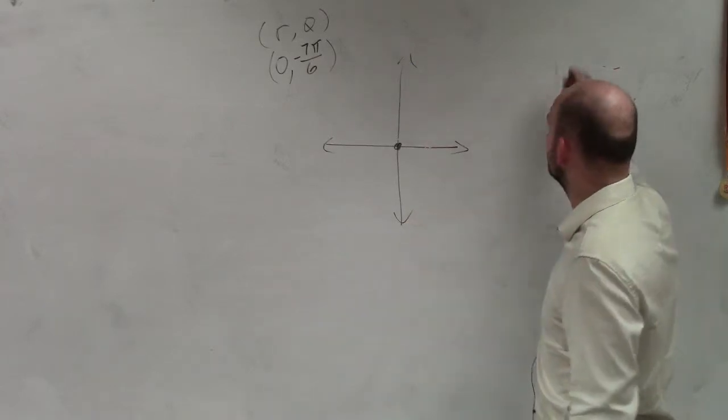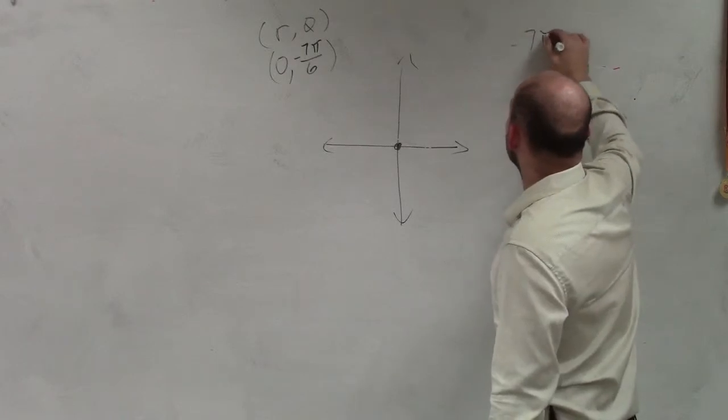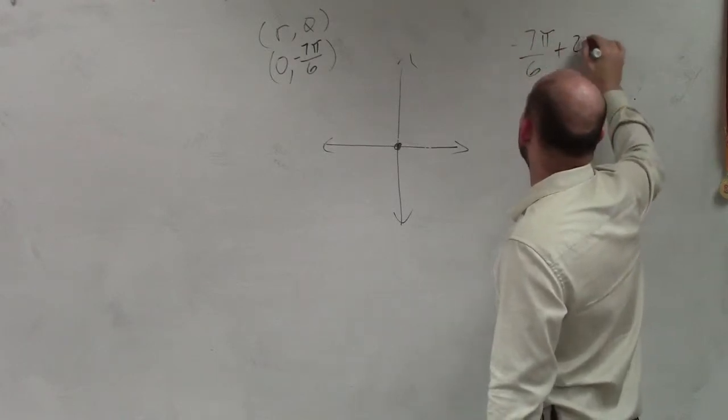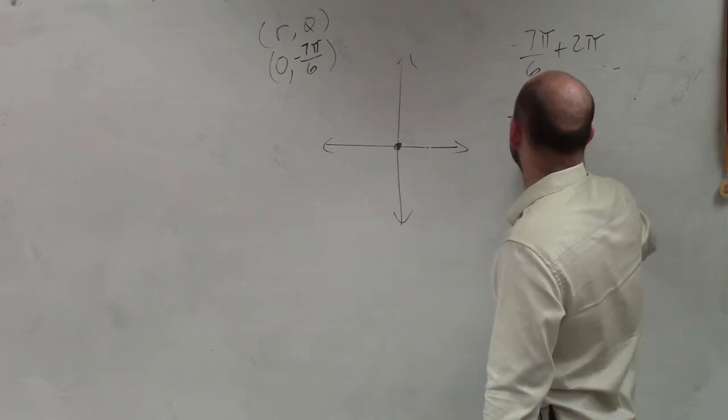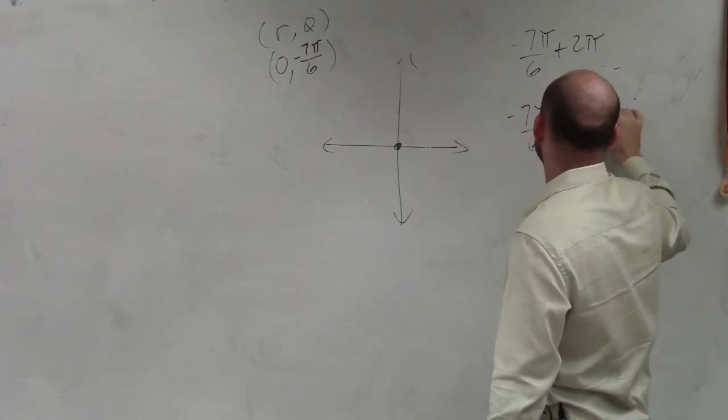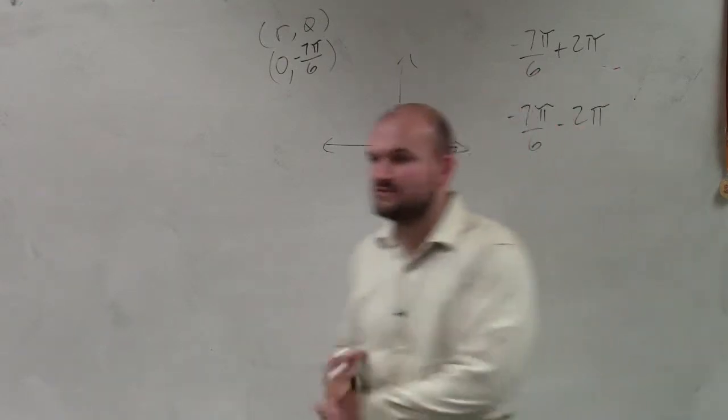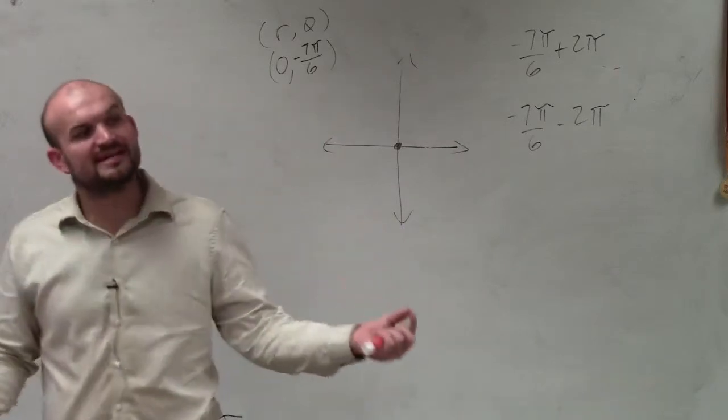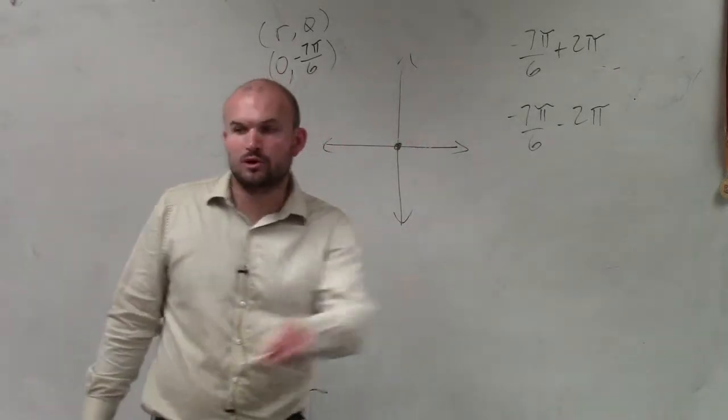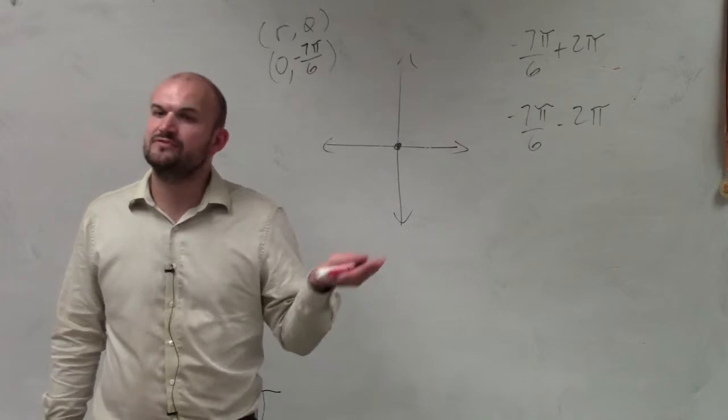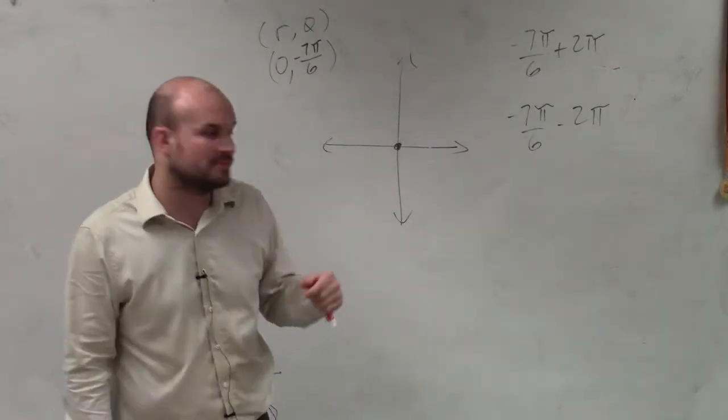So to find coterminal angles, negative 7 pi over 6, we can add 2 pi. Negative 7 pi over 6, we can subtract 2 pi. And this is the case for whatever the radius is. Doesn't matter if the radius is 0, 1, 2, or in any other problem that you guys did. Just find, with the same radius, find the coterminal angles.